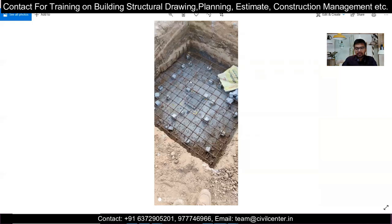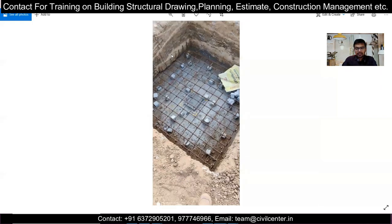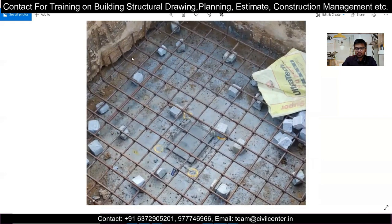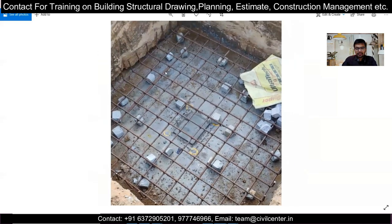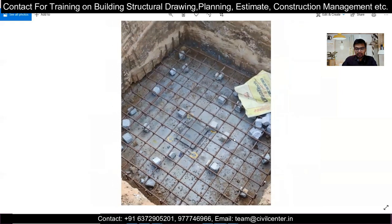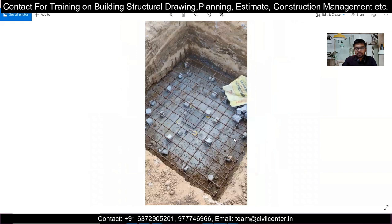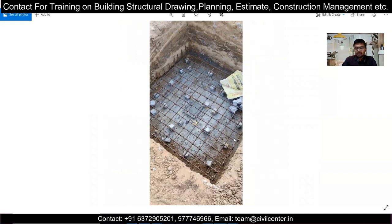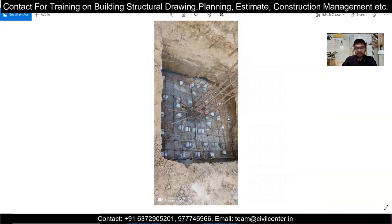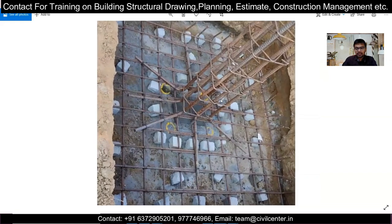After the reinforcement is arranged — as you can see, this is a single layer of reinforcement arranged in two directions, X and Y — at the ends we have given hooks of 5 inches or 125 mm. Where lapping is required, lapping is given at 50, and where it is not required, it is not given. Some footings may have double reinforcement — one at the top and one at the bottom — but in this footing we only have reinforcement at the bottom.